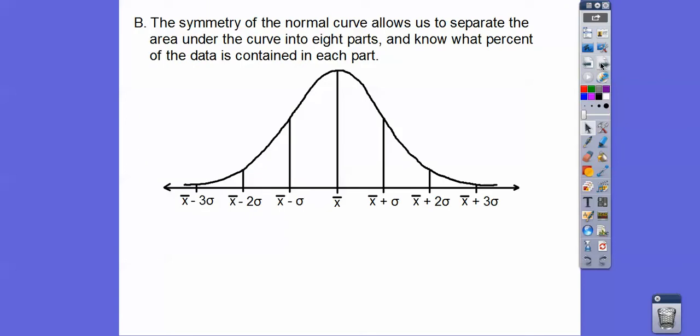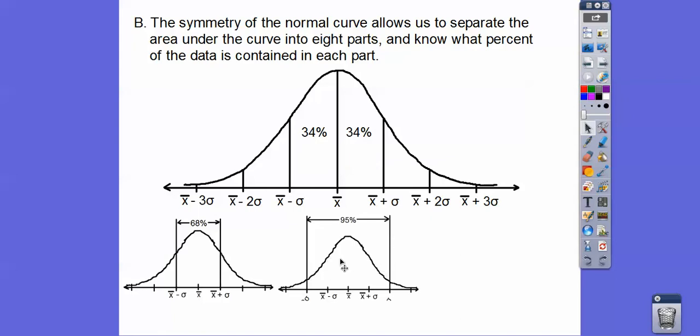So the symmetry of the normal curves allows us to separate the area under the curve into eight parts and know what percent of the data is contained in each part right there. So if 68% of the data is within one standard deviation right there, and if it's symmetrical, then that means this side equals this side. So this must be half of 68 and this must be half of 68. So each little piece is 34% of the data. And then remember within two standard deviations is 95% of the data. If this is 95% of the data and this right here is 68% of the data, these two little end pieces are the rest of the 95%. So 95 minus 68 gives us, these two guys add up to 27%. So that means this is half of 27 and this is half of 27, which is 13.5%.